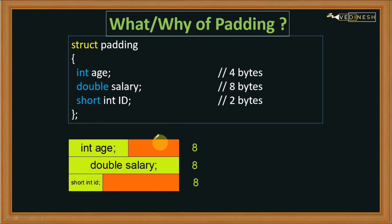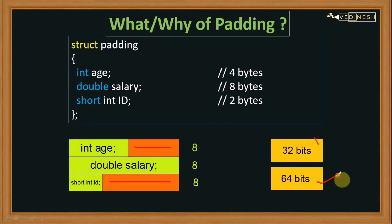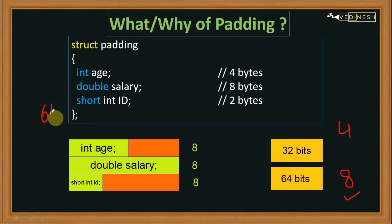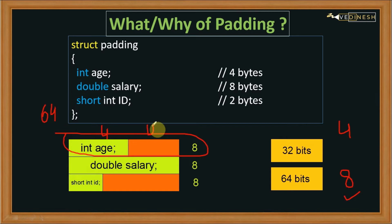Why is this much space reserved for padding? We need to understand that our operating system is of two types: 32-bit and 64-bit. 32 bits divided by eight gives four bytes. So a 32-bit OS reads four bytes at a time. Here we are using a 64-bit operating system, which reads eight bytes in a chunk. When it gets four bytes for age, the remaining four bytes are added as padding so the operating system can smoothly read or write data from memory.